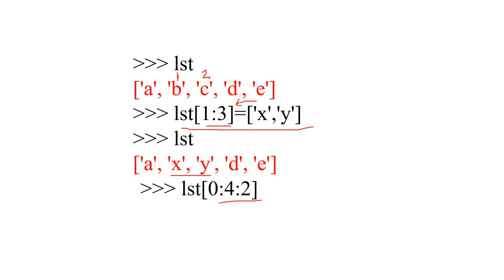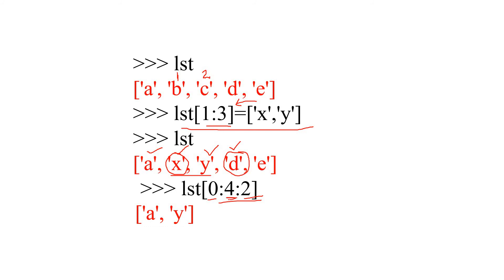Then the step value can also be used. Using list[0:4:2], starting from index 0 up to index 3 with a step of 2, every other element is skipped. So A is printed first, then X is skipped, then Y is printed, then D is skipped, and then E — that is the end value at index 3.